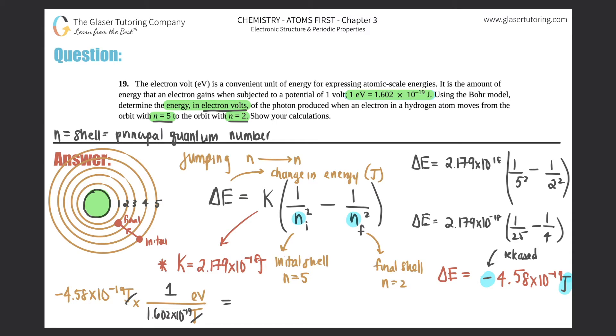So I'm going to do 4.58 times 10 to the negative 19th divided by 1.602 times 10 to the negative 19th. So technically you get negative 2.86 electron volts.